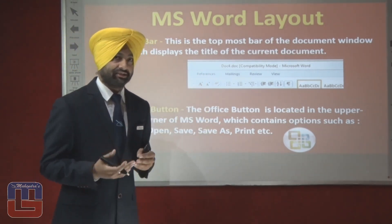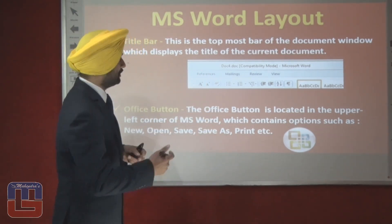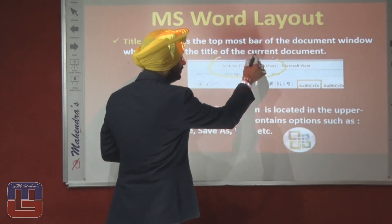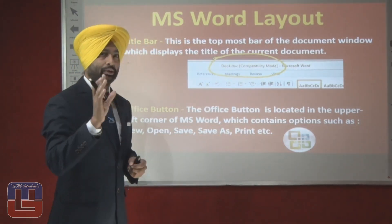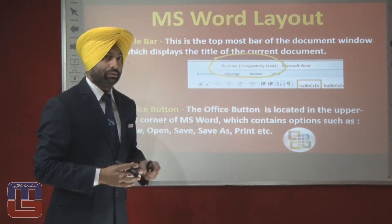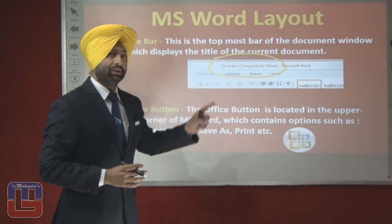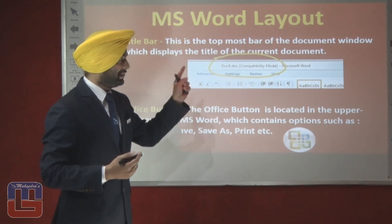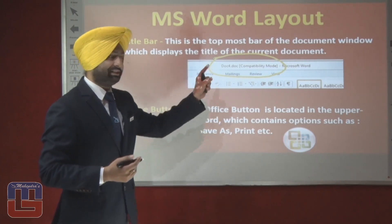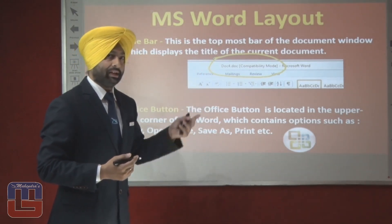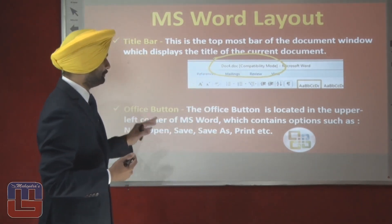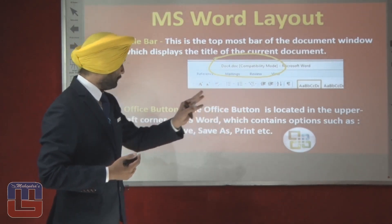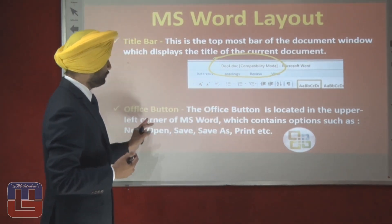The title bar is the topmost bar of the document window which holds the name of that particular document. You must have often viewed that bar displaying the name of the document. Next, we have the office button. The office button is located in the upper left corner of the MS Word window.